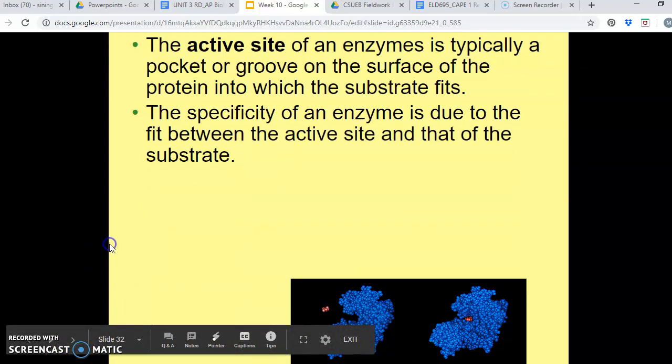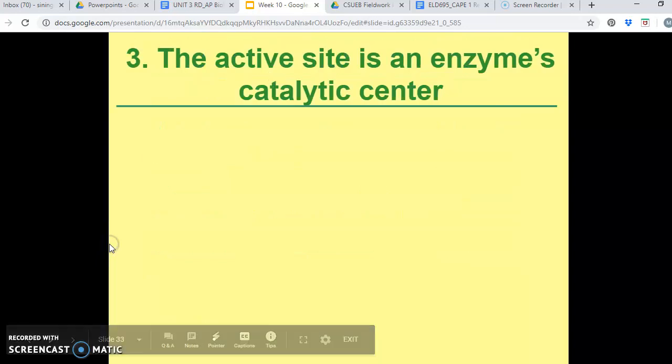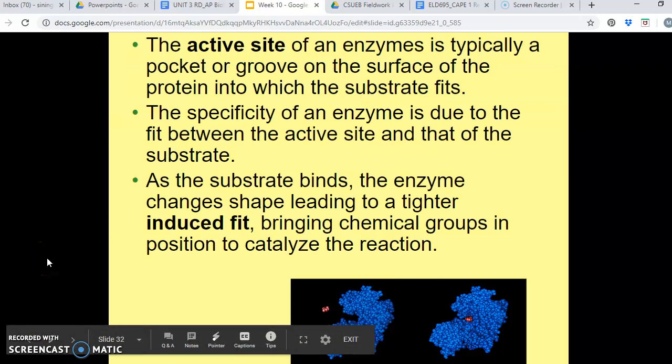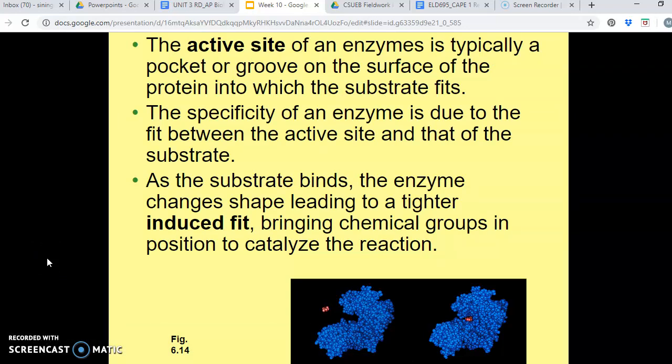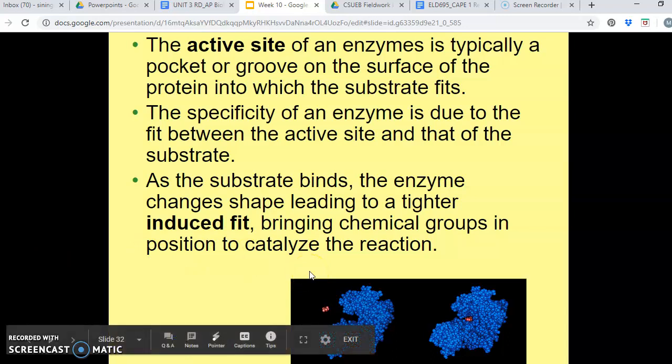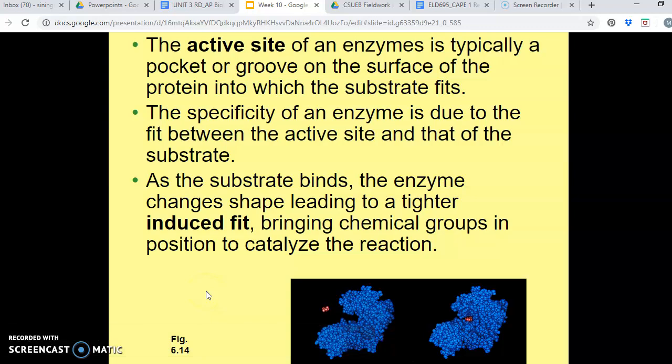The active site of an enzyme is typically a pocket or groove on the surface of the protein into which the substrate fits. So in this picture, our little red group of molecules here, that's our substrate, and then the blue big blob is our enzyme, and then right in here, this empty space is the active site. So the specificity of an enzyme is due to the fit between the active site and that of the substrate.